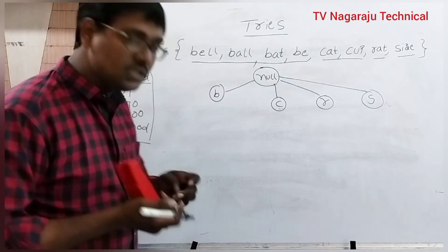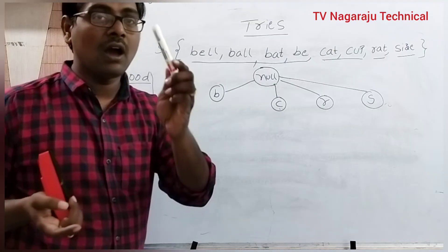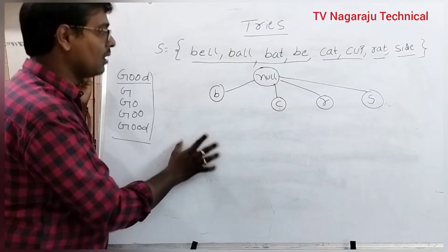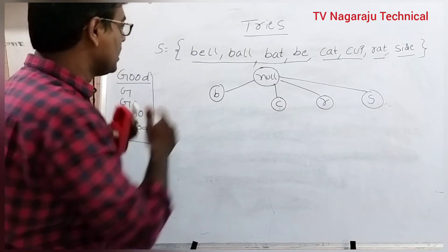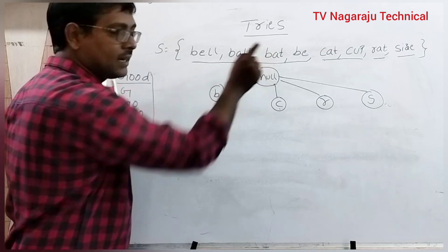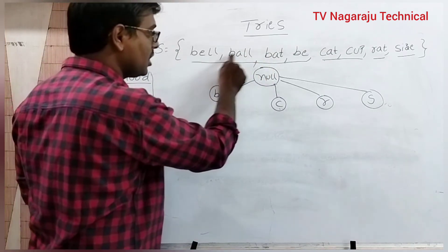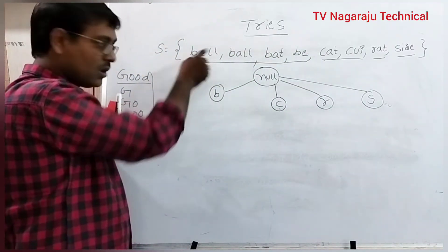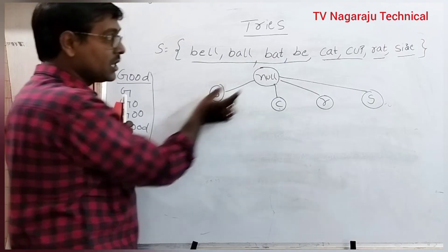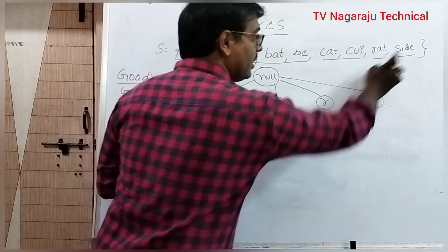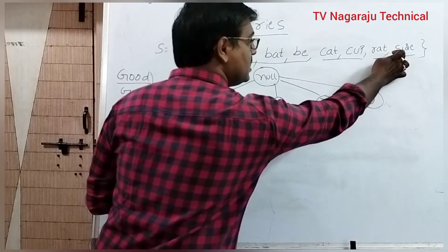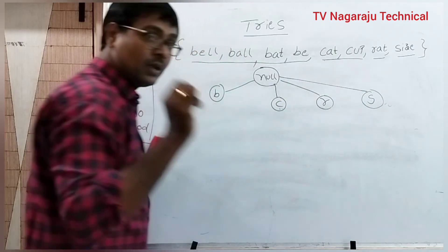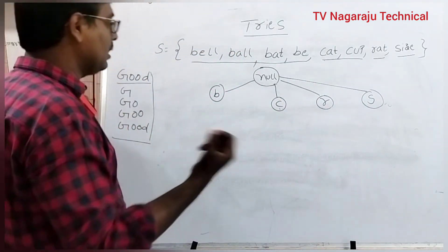How do we arrange the strings? The strings are placed in alphabetical order — the children of B are arranged in alphabetical order. How do you check alphabetical order? Simply check the characters at the first position. All the characters are the same here, so check B vs C: B is smaller, so B is written on the left side, then C, then R, then S.